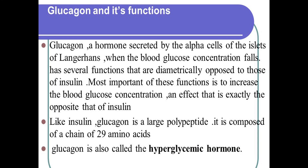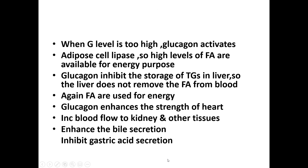Glucagon is a hormone secreted by the alpha cells of the islets of Langerhans when glucose level falls. It has several functions dramatically opposed to those of insulin. Most important is to increase blood glucose concentration — an effect exactly opposite to insulin. Like insulin, glucagon is a large polypeptide composed of 29 amino acids. Glucagon is also called the hyperglycemic hormone.